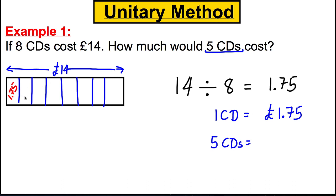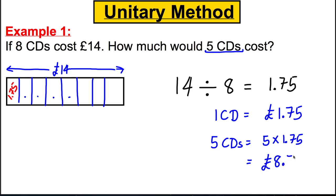Tap that into your calculator: 1.75 + 1.75 + 1.75 + 1.75 + 1.75. So 5 CDs actually cost £8.75. And you've done a difficult question there.